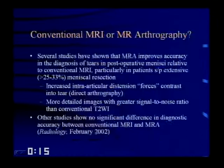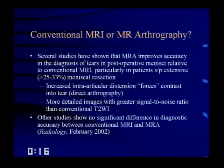Regarding conventional MRI versus MR arthrography: several studies show MR arthrography improves accuracy in diagnosing tears in postoperative menisci, particularly in patients who have had greater than a quarter to a third of their meniscus resected. Increased intra-articular distension forces contrast into the tear with direct arthrography, and T1-weighted images provide greater signal-to-noise ratio. However, other studies show no significant difference in accuracy between conventional MRI and MRA.